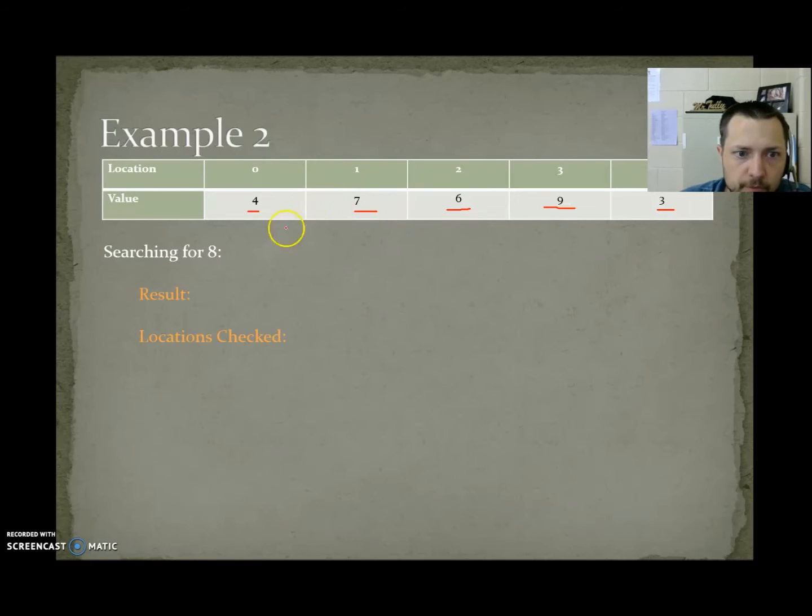Doing linear search again, we're looking for an 8. Is the 4 an 8? No. Is the 7 an 8? No. Is the 6 an 8? No. Is the 9 an 8? No. Is the 3 an 8? No. The locations we checked were 0, 1, 2, 3, and 4. We had to check 5 locations looking for an 8. We did not find an 8, so our result is minus 1.